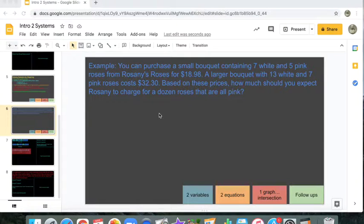All right, break this down. You can purchase a small bouquet containing seven white and five pink roses from Rosani's Roses for $18.98. A larger bouquet with 13 white and seven pink roses costs $32.30. Based on these prices, how much should you expect Rosani to charge for a dozen roses that are all pink?